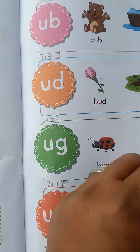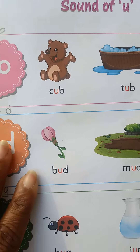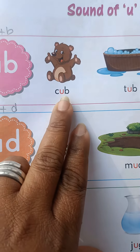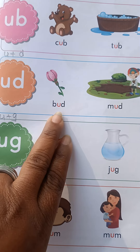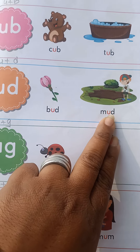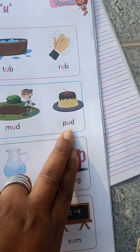So here the two-alphabet sound of U. First the UB word group: C of cup, T of tub. Other words with UD: B-UD, bud; M-UD, mud; P-UD, pud.